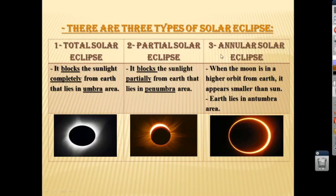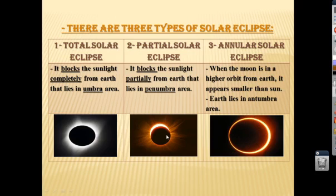In an annular solar eclipse, when the moon is in a higher orbit from earth, it appears smaller than the sun, and earth lies in the antumbra area. As we see in the picture, the moon is smaller than the sun, so the sun appears in a ring shape. In a partial solar eclipse, the moon covers the sunlight partially — the moon covers only part of the sun.